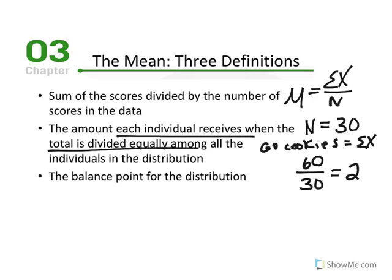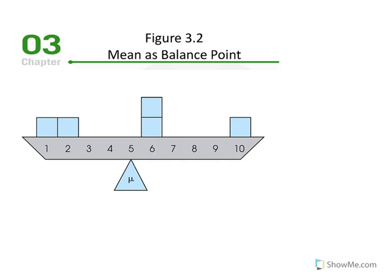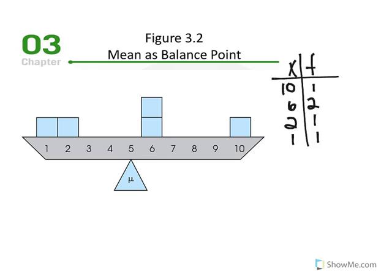The third definition is the balance point, which will be displayed visually. The mean is the balance point in the sense that there is equal distance — not equal number of scores — from the center of the distribution. Consider these X values and frequencies: X = 10 occurred once, X = 6 occurred twice, X = 2 occurred once, and X = 1 occurred once. To calculate the average: μ = sum of X over N.